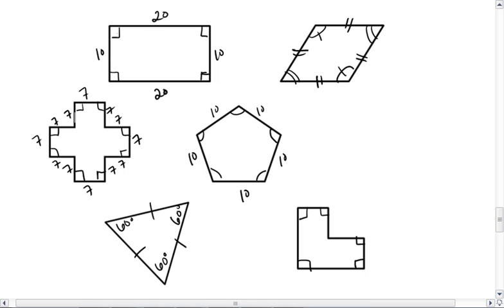Let's start with this rectangle up top. It's four sides, so it is a quadrilateral. Notice all my angles are marked as right angles, so it is equiangular, but I have two 10 sides and two 20, so it's not equilateral. It's a quadrilateral that is equiangular.